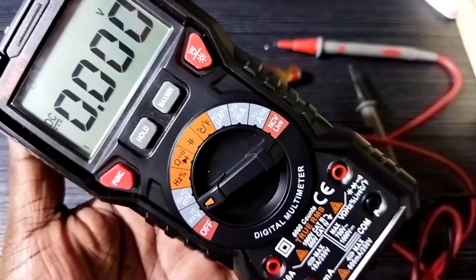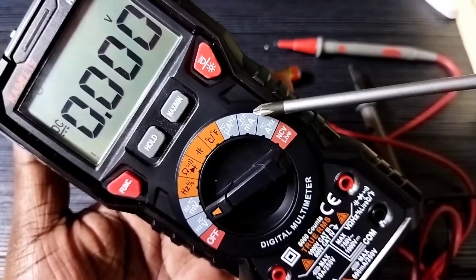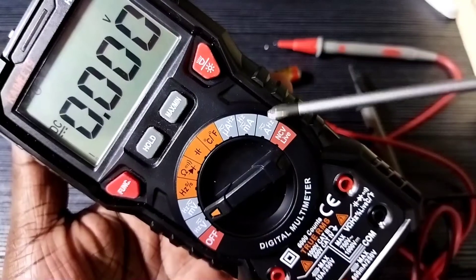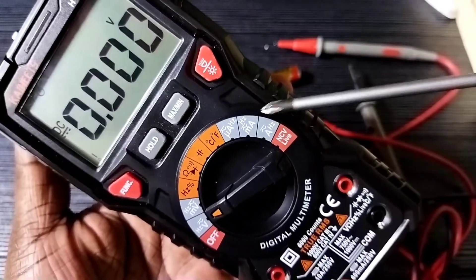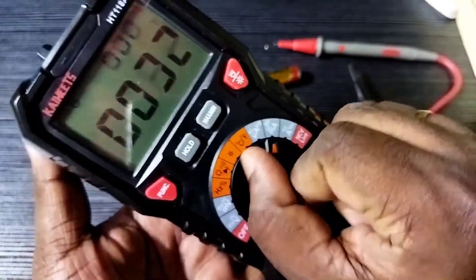In this multimeter, we have two options: ampere and micro ampere. First, I am going to measure in ampere. Rotate the rotary switch and select ampere.